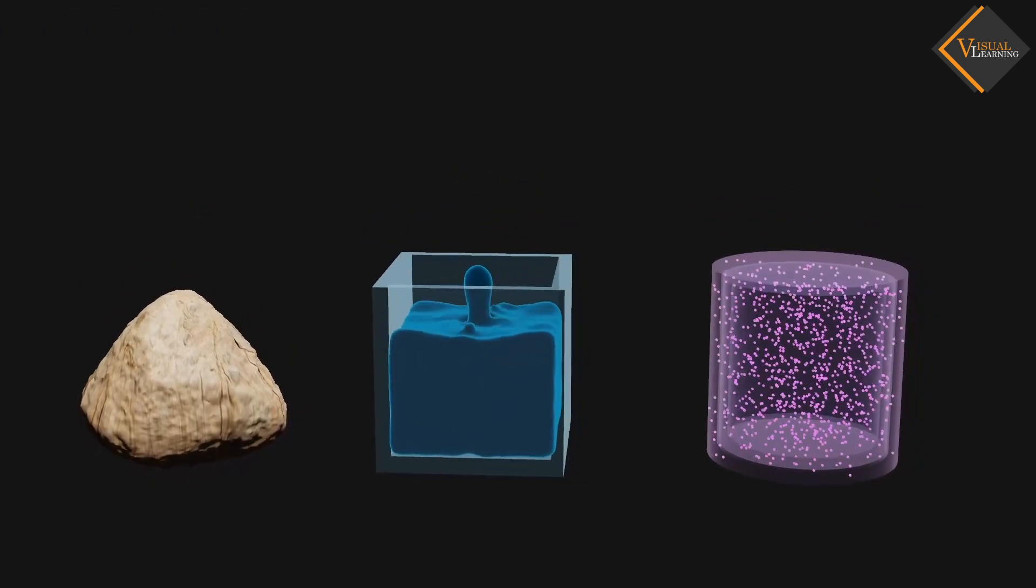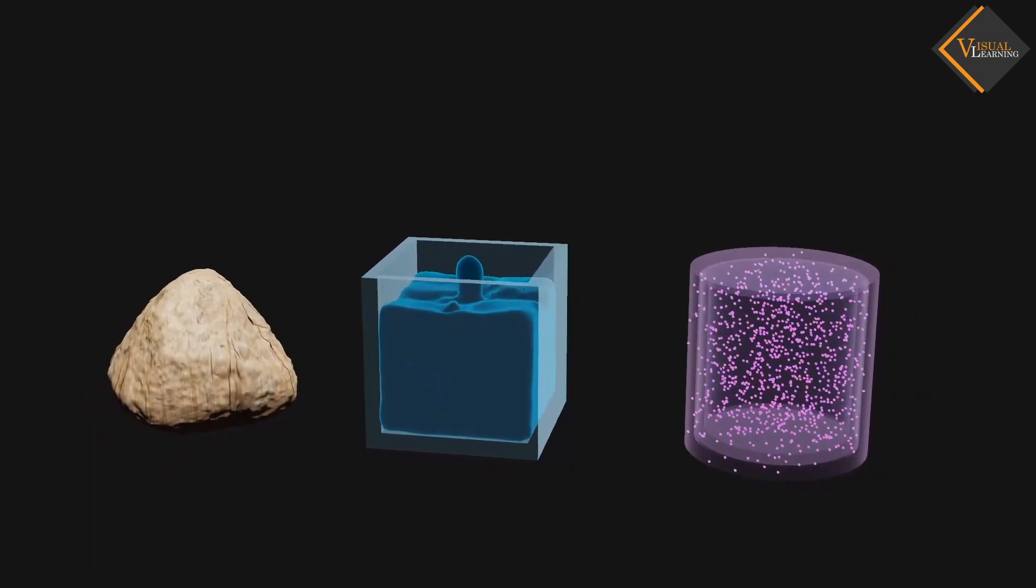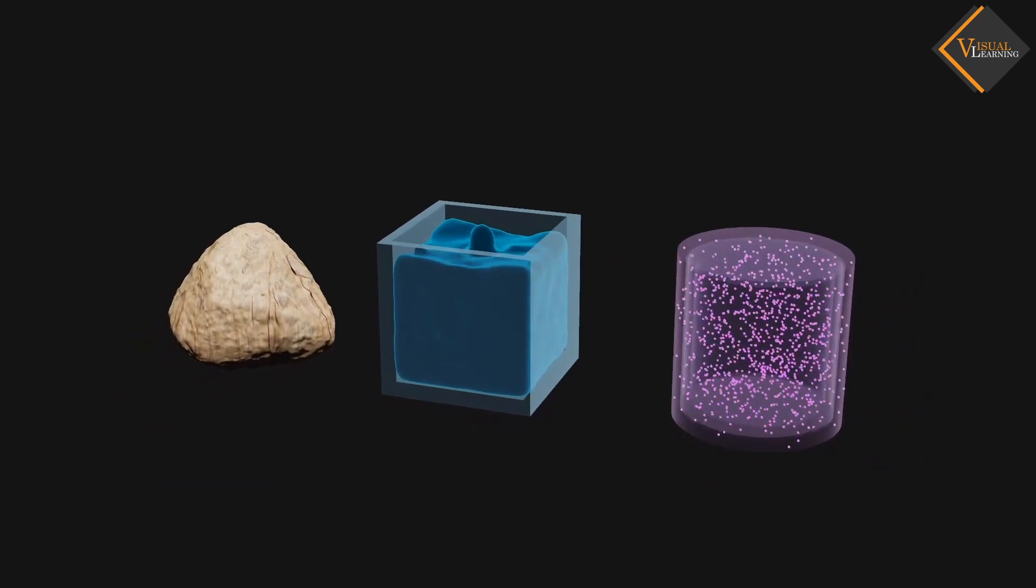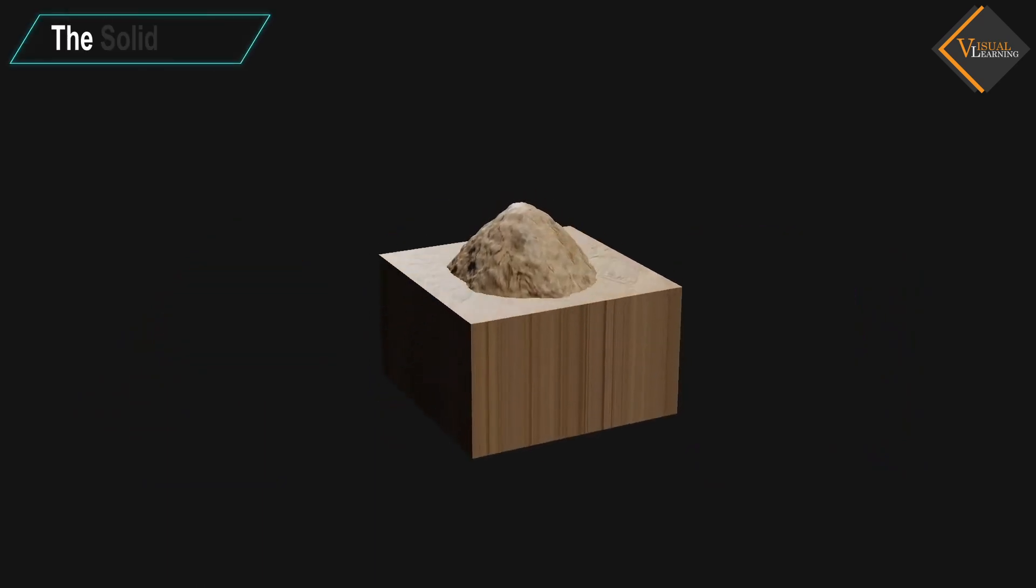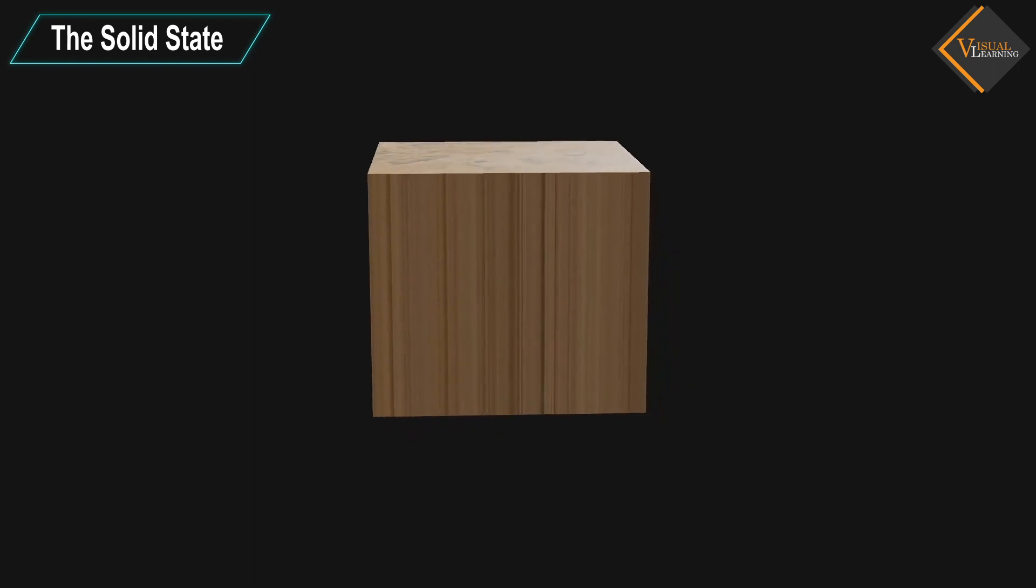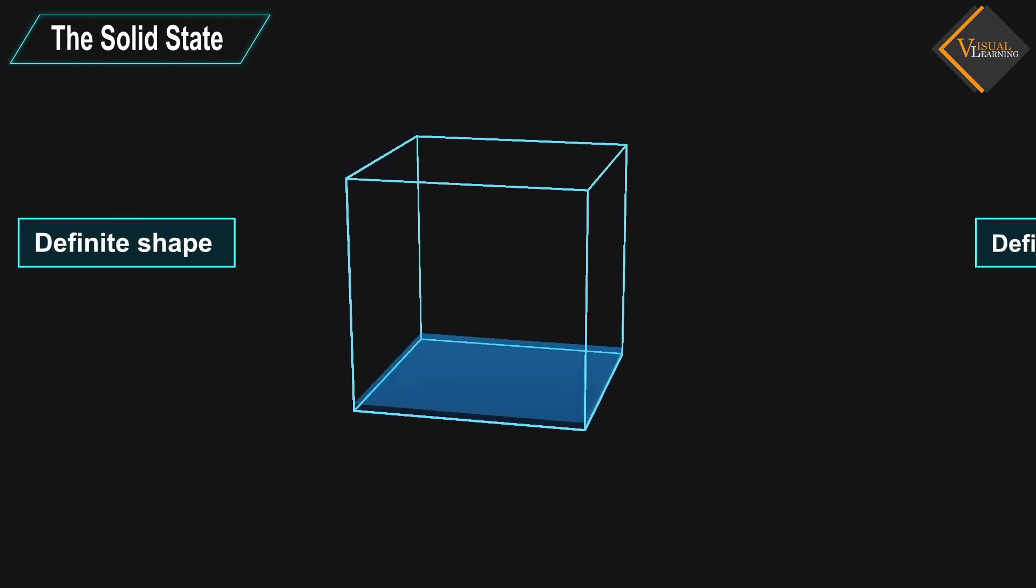Now, let us study the properties of these three states of matter in detail. The Solid State: A solid is defined as a state of matter with a definite shape and definite volume.